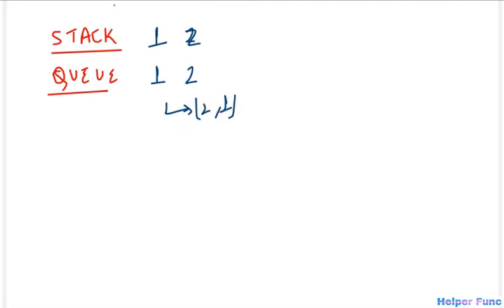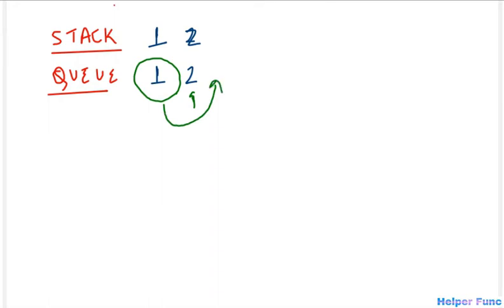So how can we reverse that? Simple — whenever we push a new element into the queue, we take all the elements that were already there, pop them from the front, and push them again into the same queue. So when I push two, the queue starts as one and two. Then I pop one from the front and push it back, giving us two and one. This achieves the reversed order we need.